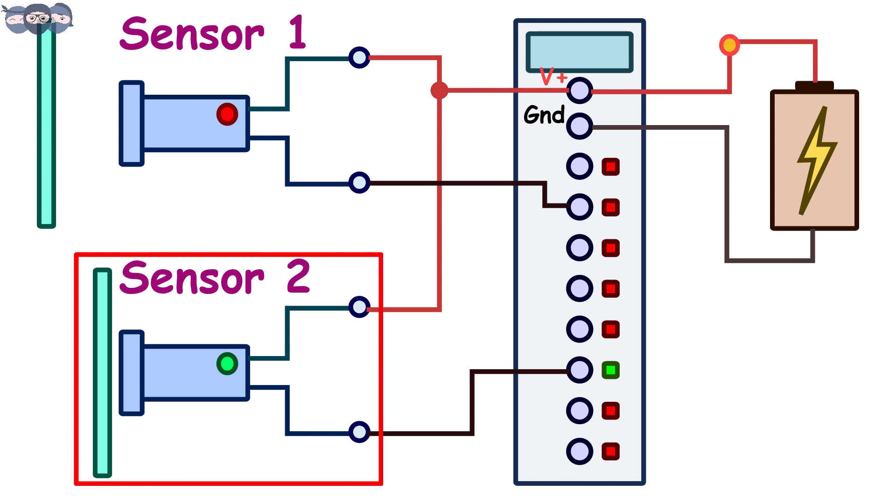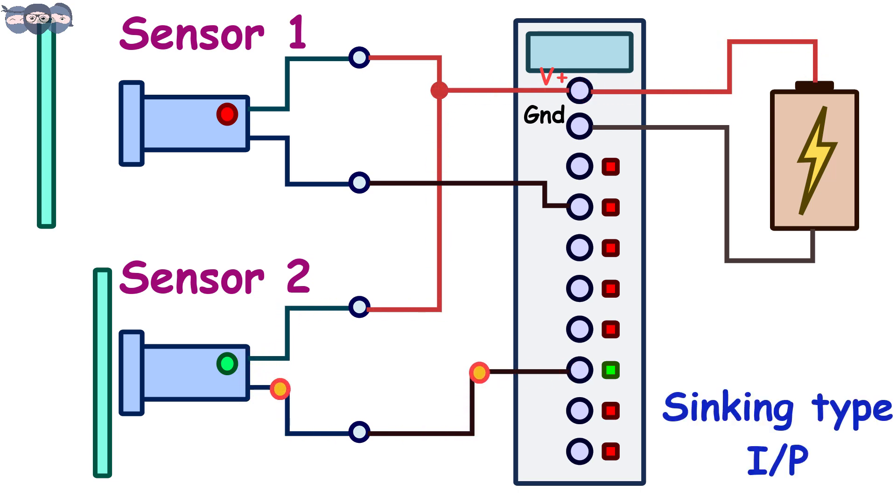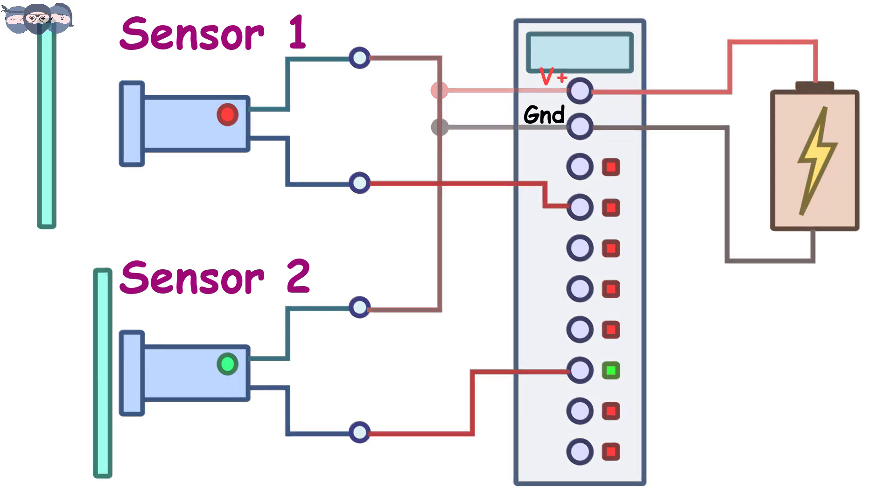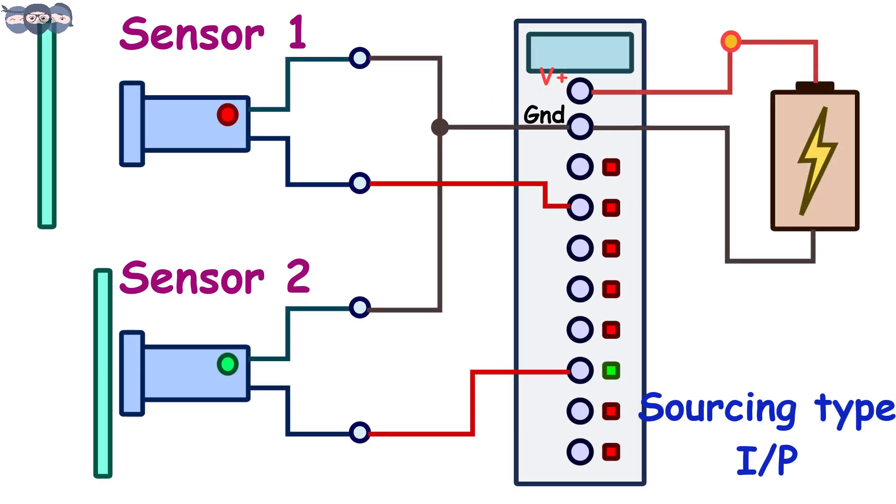When a sensor is triggered, current first flows into the sensor as shown in the animation and then into the input module. Hence, the input module acts as a sinking type. The same analogy can be used for a sourcing type input module.